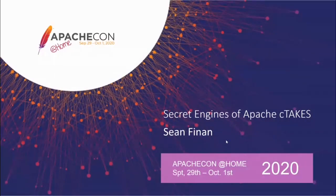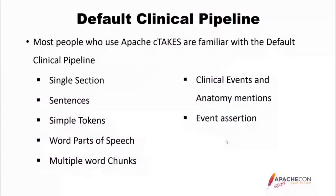This is about the secret engines of cTAKES. The default clinical pipeline is what most people are familiar with. It detects and puts all text into a single section, identifies sentences, simple tokens, parts of speech for words, chunks multiple words together, identifies clinical events and anatomical mentions, and asserts certain attributes of those events, such as uncertainty or negation.